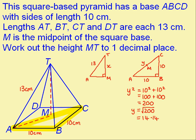Now remember the length we're looking for is AM and AM is exactly half of y. So we can now halve this to give us 7.07. I can go back to my original 2D diagram and put this on here.